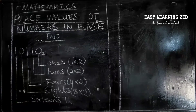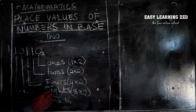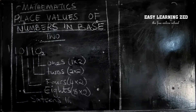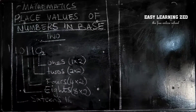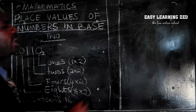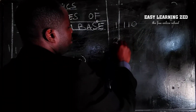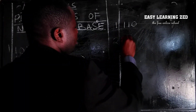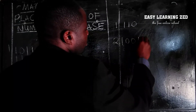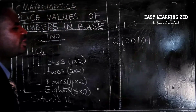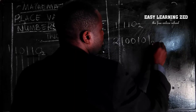So the place values of numbers in base 2 are: ones, twos, fours, eights, sixteens, and so on. Now let me give you two numbers — I want you to write the place value in those numbers. Number one: 1 1 0 — write the place values. Then: 1 0 0 1. Then: 0 1 — write the place values of these numbers. Remember they are in base 2.